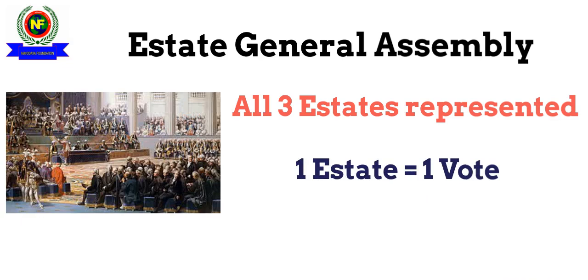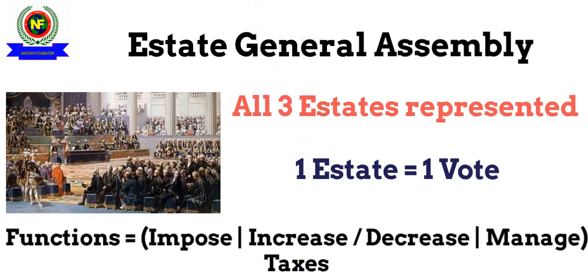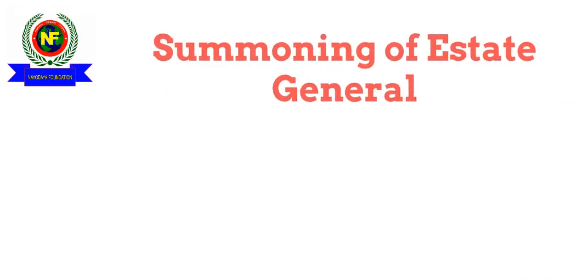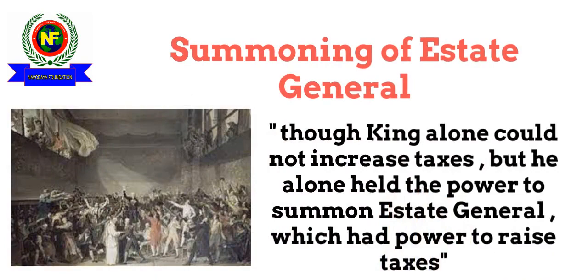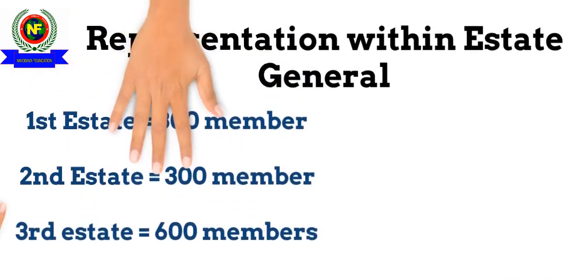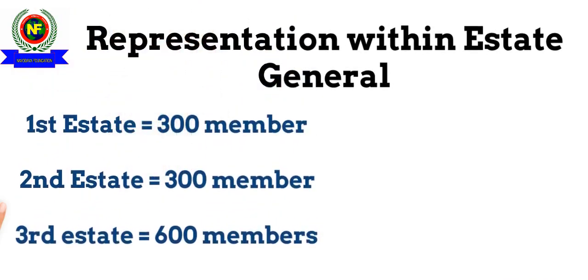The functions of the Estates General were to impose, decrease, and manage taxes. Though the monarch alone could not decide upon the imposition of taxes, he alone could call or summon the Estates General. King Louis XVI summoned the Estates General on 5th May 1789. The first and second estates had 300 representatives each, but the third estate, which consisted of normal people, had 600 members.